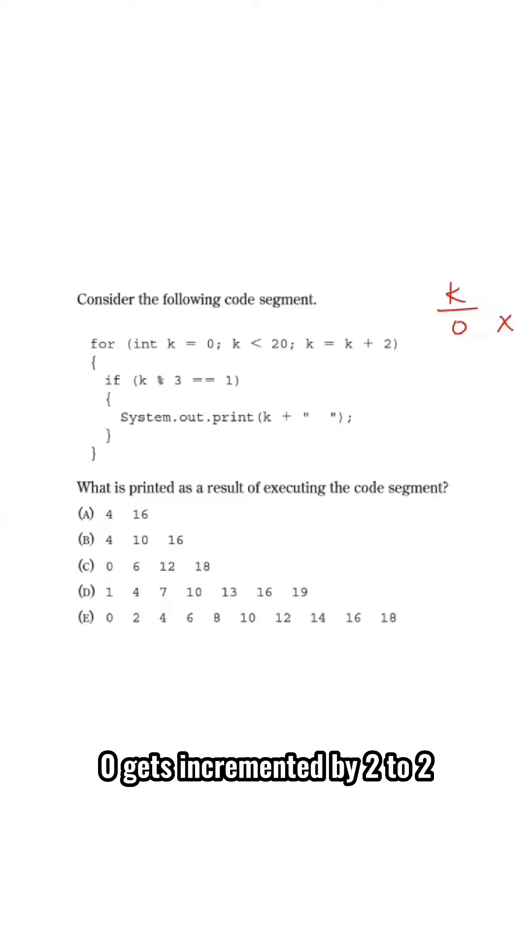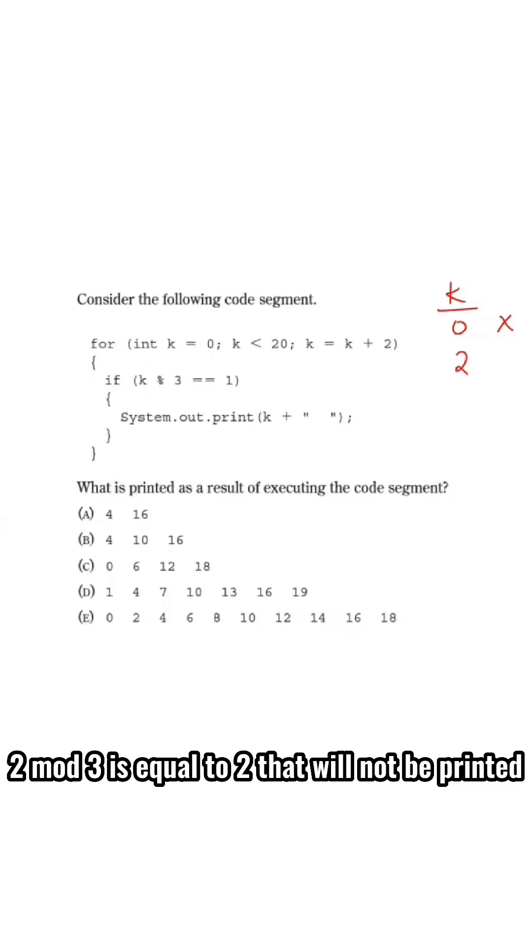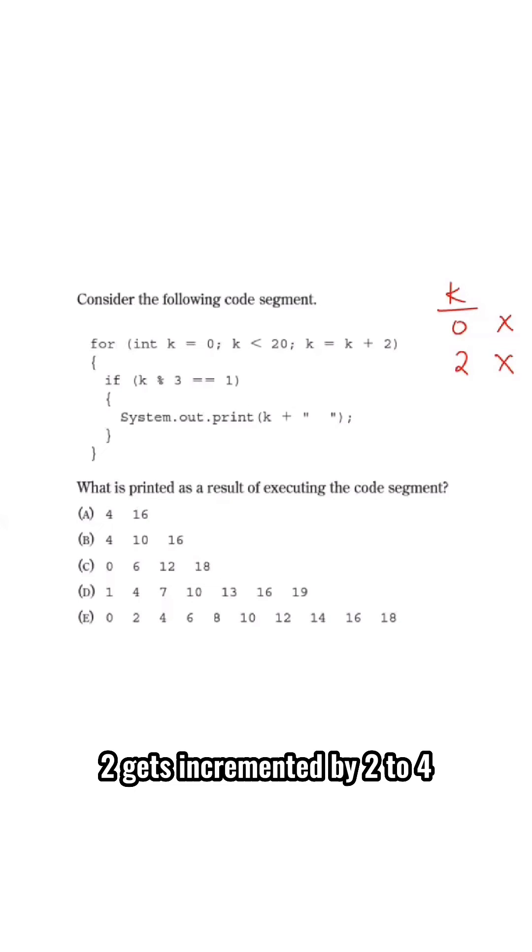0 gets incremented by 2 to 2, 2 mod 3 is equal to 2, that will not be printed. 2 gets incremented by 2 to 4, 4 mod 3 is equal to 1, that will be printed. Looking at the answer choices, the first number printed has to be 4, which eliminates C, D, and E.